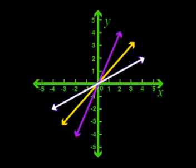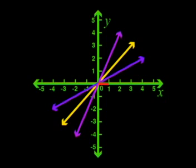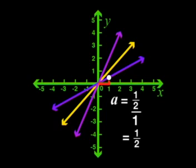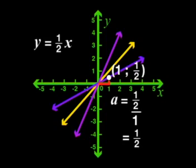Now what about the other graph? It seems to be flatter than the parent graph. From 0, moving 1 to the right means I have to move only a half unit up to reach the graph. So the gradient will be a half divided by 1, which is a half. This is the point (1, ½). The y value is half of the y value on the parent graph where x is 1 on both. So we only traveled half as far up or down as on the parent graph — that's what makes the graph flatter. The formula of this graph is y equals half x.